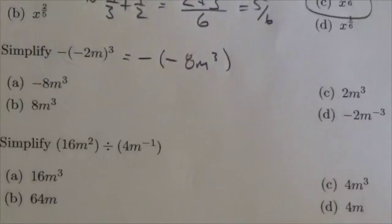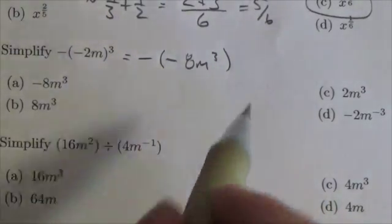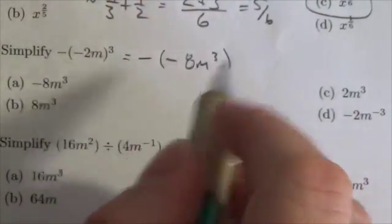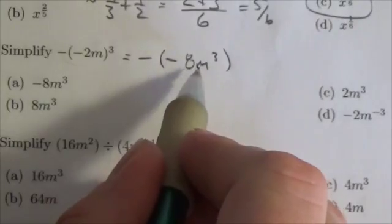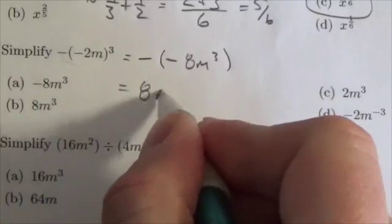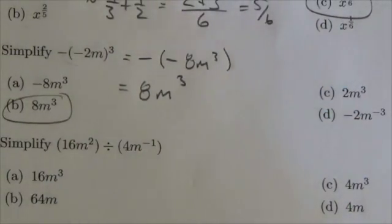So now we've dealt with the exponent here, now we're going to deal with the multiplication. We're going to multiply that negative through. There's no addition or subtraction here in between terms, this is a negative term, so I don't need to distribute this through. I'm just going to multiply it straight across here, so this is going to become positive 8m³. Compare that to the answers here and it's got to be B.